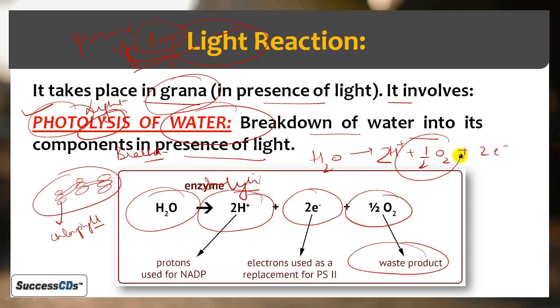This oxygen is a waste product. As a result of photosynthesis, oxygen is given out. These two electrons will help later - they are used as replacement for PS2. These hydrogen ions are also used in NADP.